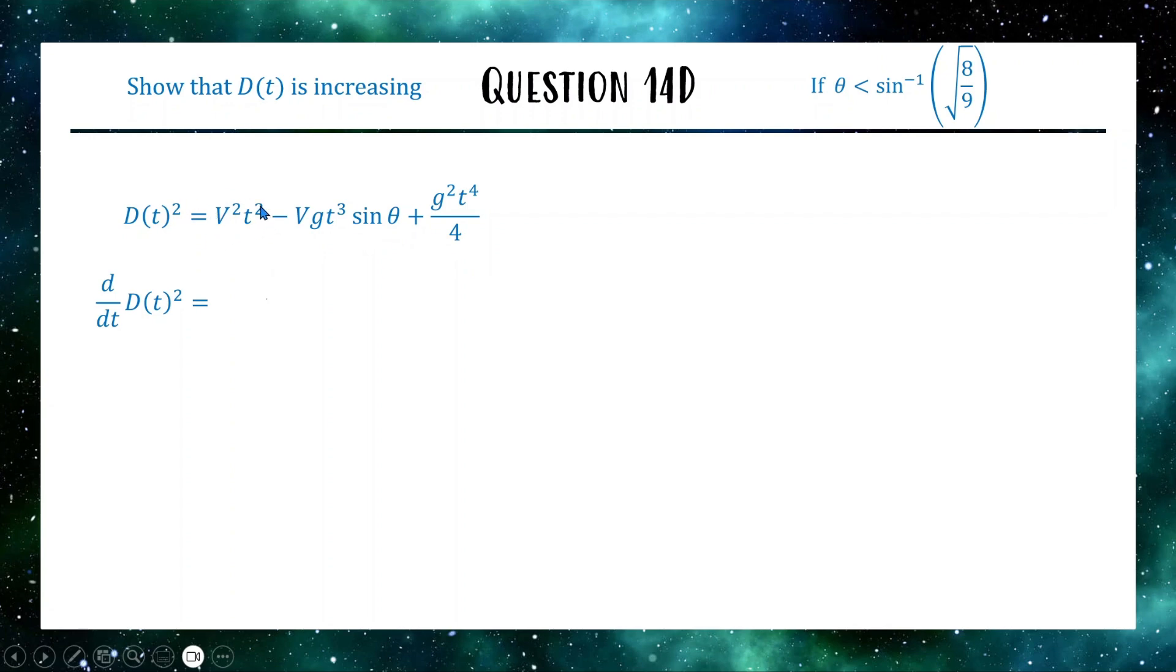For our first term, the two is going to come down the front and we're going to get two V squared T. In the middle here, we're going to bring the three down off the power of the T. The VG sine theta are just going to be chilling. We are not touching those. So we have three VG T squared sine theta. Now on the end, bringing the four down here is going to get rid of the four on the bottom of this fraction, leaving us with G squared T cubed.